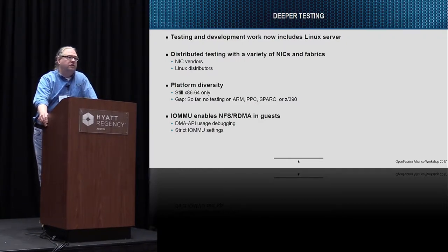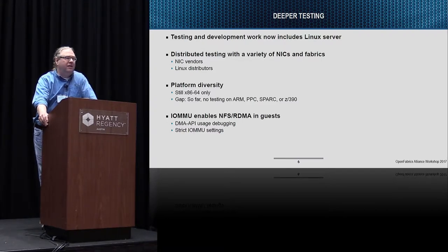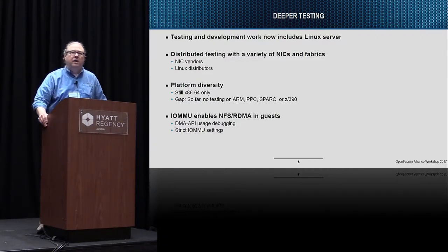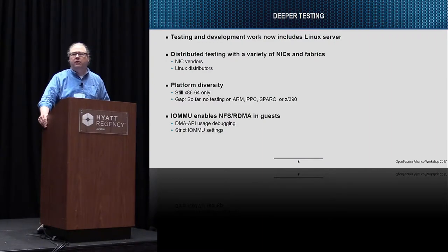I've been able to reduce the number of registration modes we have to test — last time it was five on the Linux NFS client, now it's down to two. Only FMR and FRWR are supported in the Linux NFS client now, which makes our test matrix a lot smaller. The bad news is platform diversity is pretty narrow — x86 only. I've gotten requests for help with problems on PPC 64, but I don't have regular access to PPC 64 hardware and no volunteers have been able to provide it, so there's no upstream statement of support for NFS over RDMA on that platform.